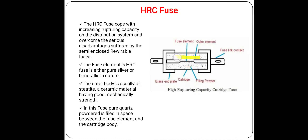The HRC fuse uses pure quartz as filling powder. During normal rated current, the heat energy generated is not sufficient to melt the fuse element. When a fault such as a short circuit or overload occurs, the fuse element melts before the fault current reaches its first peak value. As the element melts, it vaporizes; the chemical reaction between the metal vapor and quartz powder forms a high-resistance substance that quenches the arc and interrupts the current.